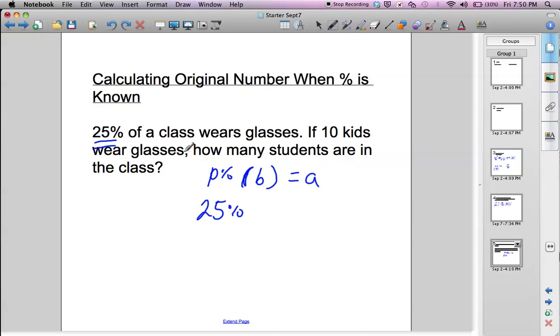Okay, 25% of a number, 25% of the class. We don't know that number. That's our variable. So 25% of the class equals 10 kids. 25% wear glasses, 10 kids wear glasses. So the 10 is the 25%.